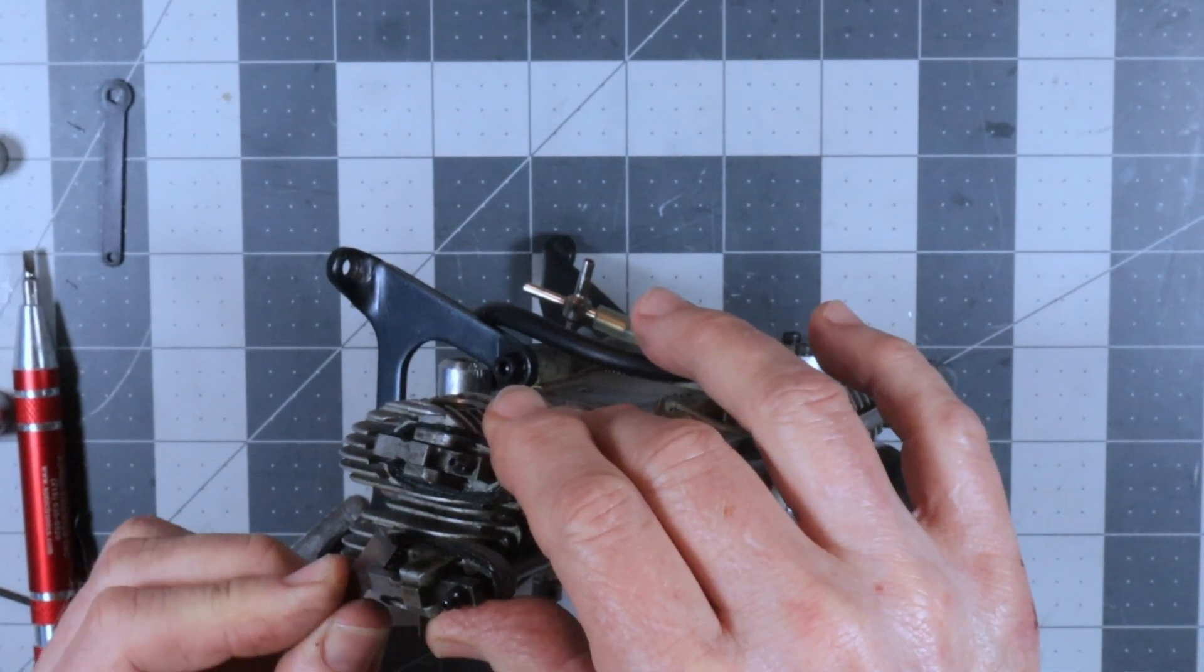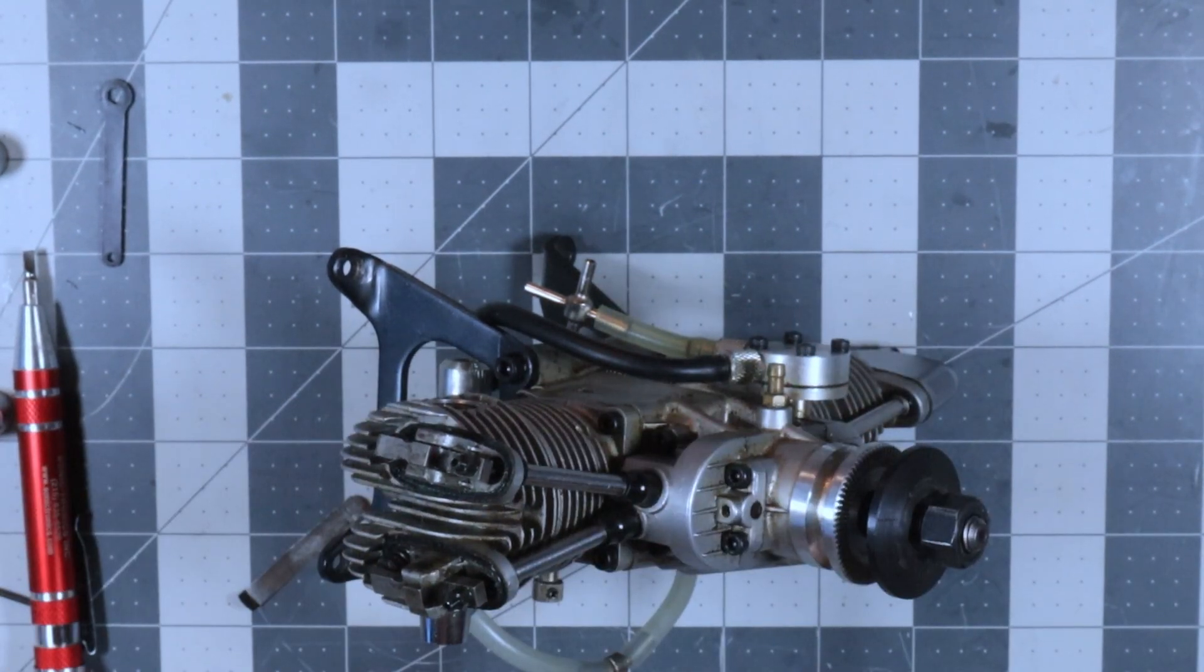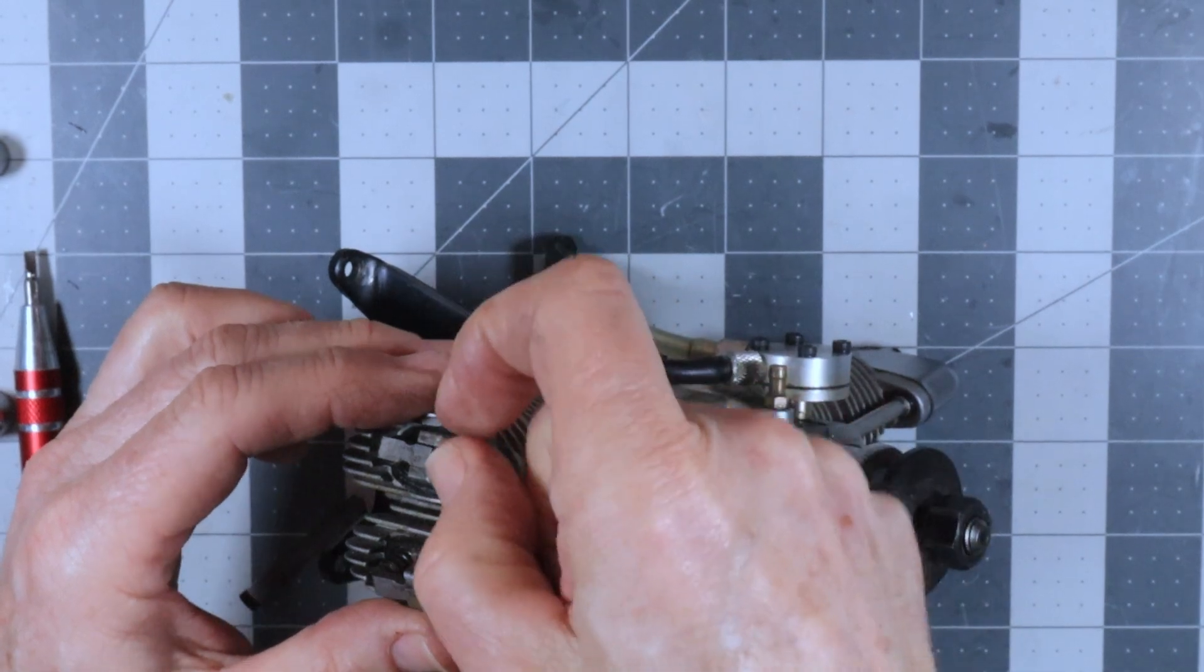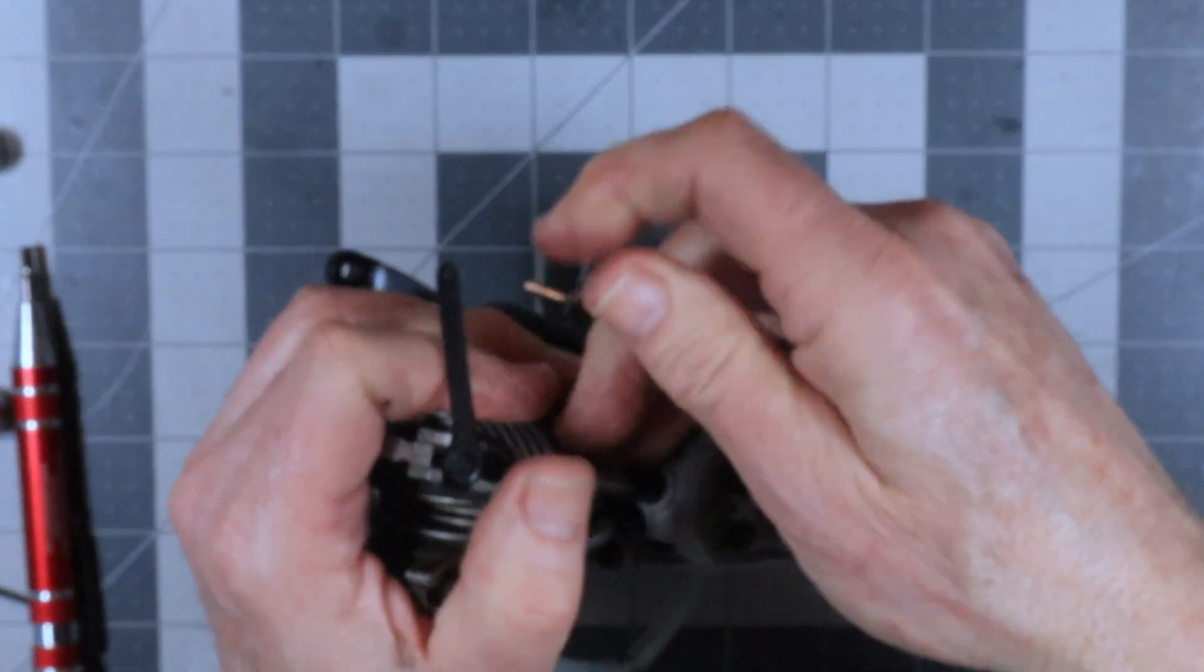So this intake valve is set good because it's really nipping and it's hard to get that in there. This goes in there rather easily. So this exhaust valve on this cylinder is going to need to be set.